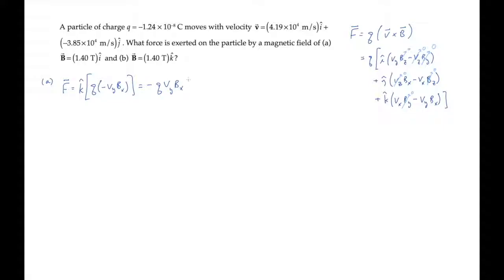And then substitute all the values we're given. Finding that the force in part A is in the negative z direction with a magnitude of 6.68 times 10 to the minus 4 newtons.